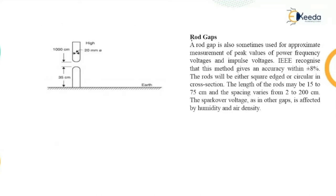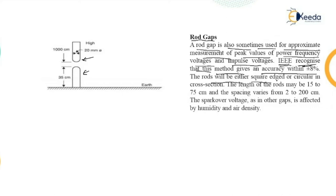The second part is the rod gap. Similar to a sphere gap, a rod gap uses two rods — one grounded and another held by an assembly — with a gap between them. A rod gap is sometimes used for approximate measurement of peak values of power frequency voltage (50 Hz) and impulse voltage. The accuracy of this method is within plus or minus eight percent.